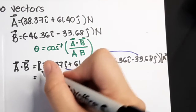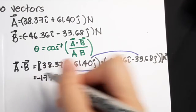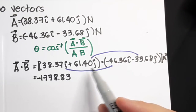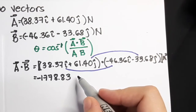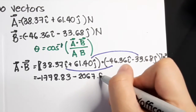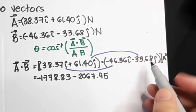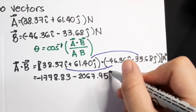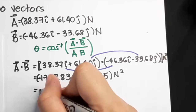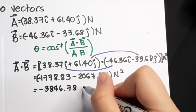So we multiply 38.37 times negative 46.36. For the magnitude first, that is 1,778.83 and that will be negative since this is negative. Then i-dot-i is 1, so I will not place it. For the second one, plus negative 2,067.95, and that is j times j — j dot j equals 1. So the answer is negative 3,846.78 Newton squared.